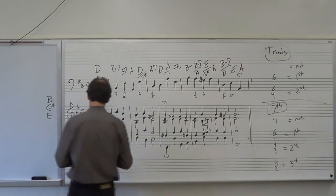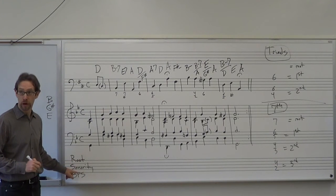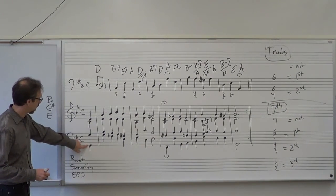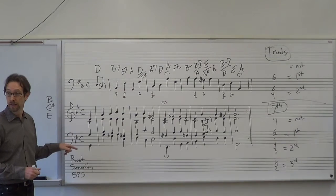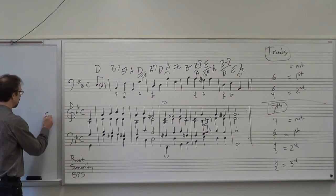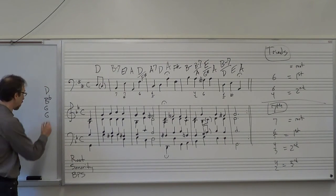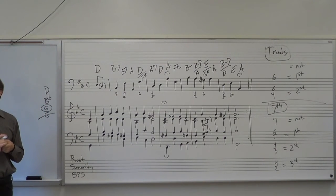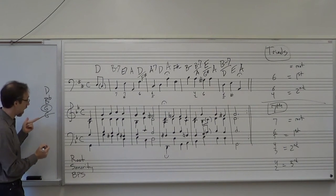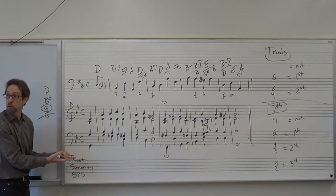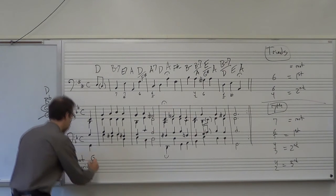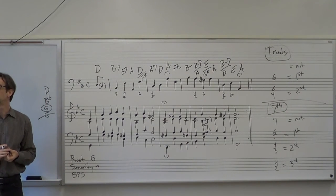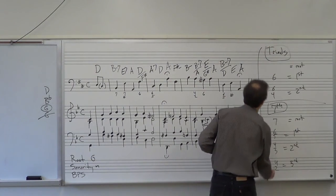Let's get started quickly on the next example. For each chord, identify the root, the sonority — the type of chord — and the base position symbol, which is the same as figured bass. In this chord the notes are G, G, B flat, D. Doublings don't change the chord, so I can ignore that there are two Gs and say G, B flat, D. The root is G; since G is the lowest note, it's root position — a G minor triad. Nothing needs to be written for the base position symbol.